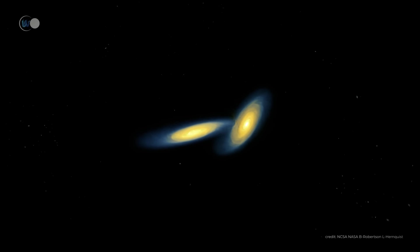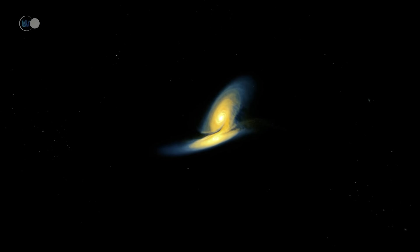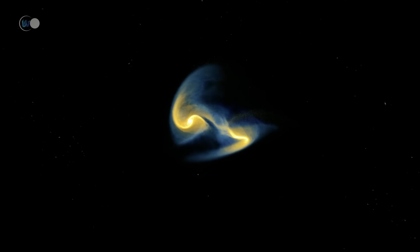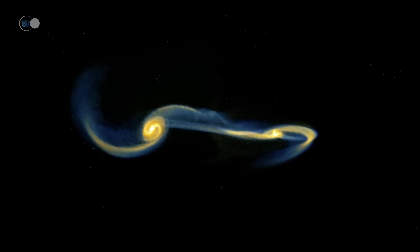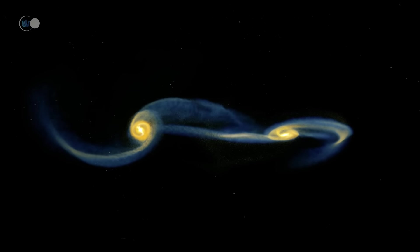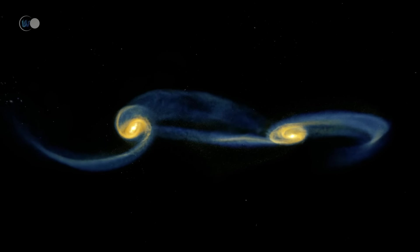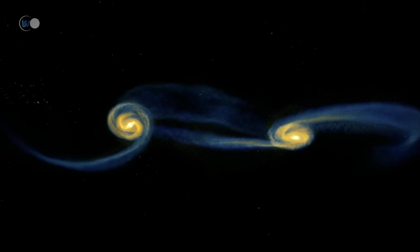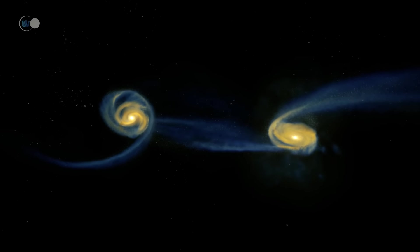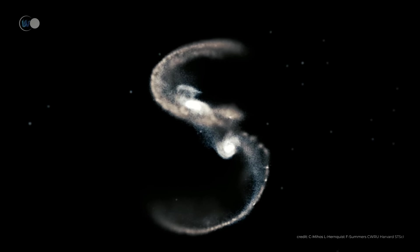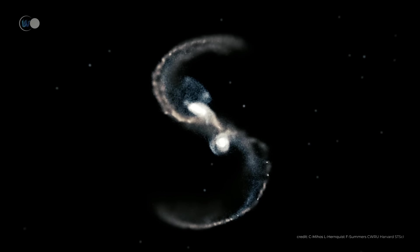Collisions occur when the two galaxies collide at a speed that allows each to continue on its course. Stars do not collide, but gas and dust do. The interstellar medium heats up, and galaxies can see their trajectories deviate. In most cases, their original shape is altered.